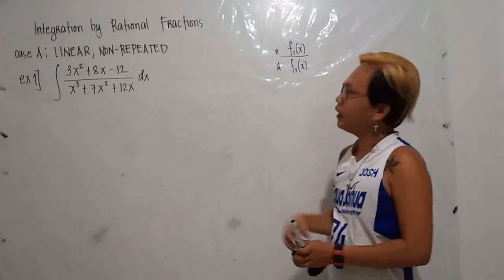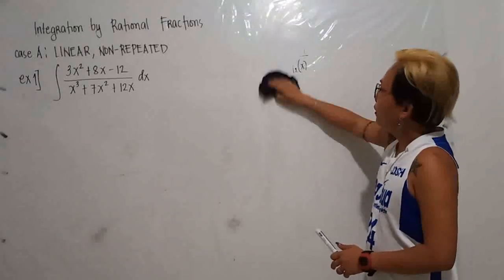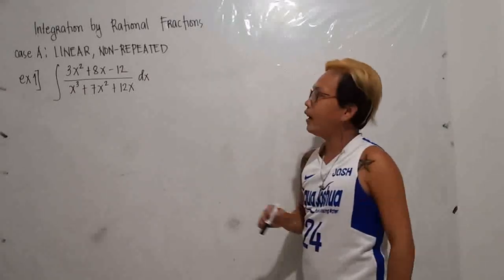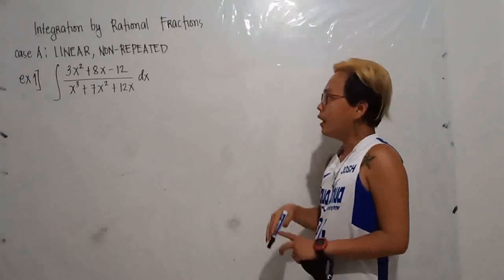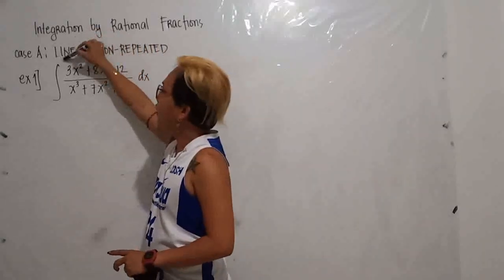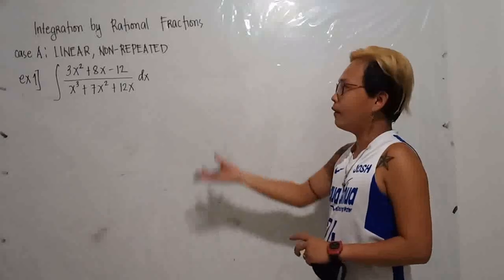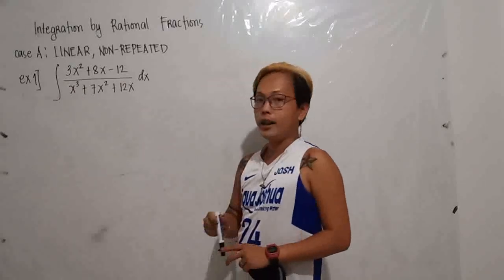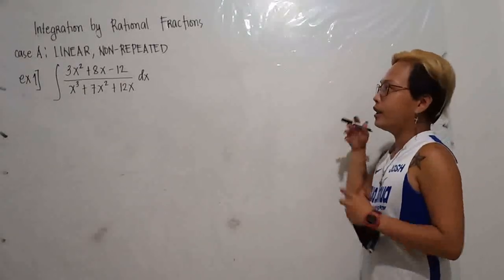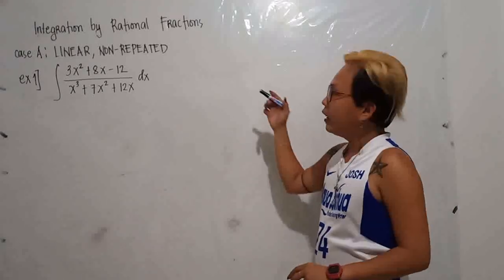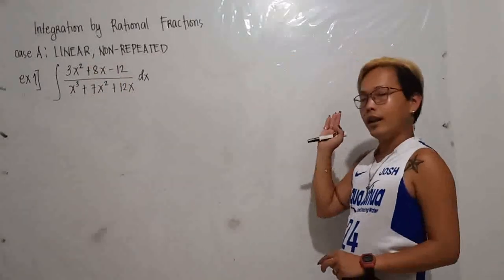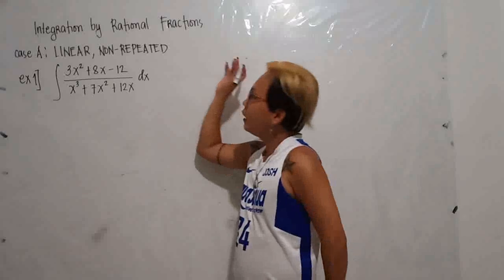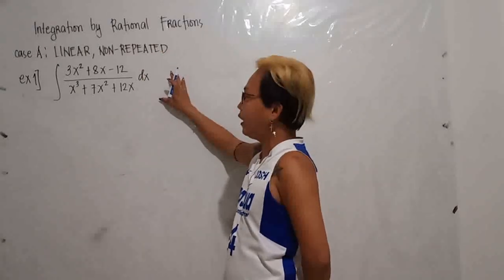Let's go back to integration by rational fraction. We will now have Case A: linear non-repeated. When we say linear, the degree is 1 — you must have first degree. The roots of the denominator are non-repeated, so it is linear. Meaning you must have factors like x plus A, x plus B, and so on. In this topic, factoring from algebra comes in, so you must know how to do factoring.